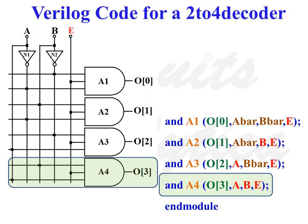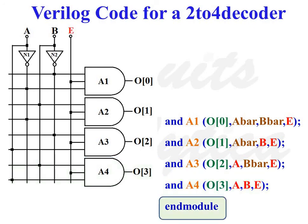The output port O is 4 bits wide. Addressing this 4-bit port individually: the first bit is O0, then O1, then O2, and finally O3. So this is the gate level modeling of a 2 to 4 decoder, where we have 6 gate instantiations: 2 NOT gates and 4 AND gates. As we have completed all 6 instantiations, we can end the module using the keyword endmodule.